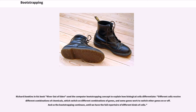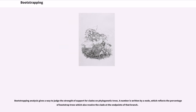Richard Dawkins in his book River out of Eden used the computer bootstrapping concept to explain how biological cells differentiate: different cells receive different combinations of chemicals, which switch on different combinations of genes, and some genes work to switch other genes on or off. And so the bootstrapping continues, until we have the full repertoire of different kinds of cells. Bootstrapping analysis also gives a way to judge the strength of support for clades on phylogenetic trees. A number is written by a node which reflects the percentage of bootstrap trees which also resolve the clade at the endpoints of that branch.